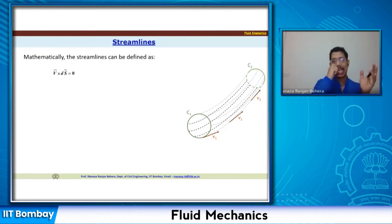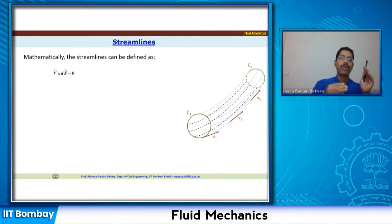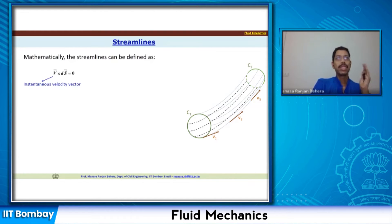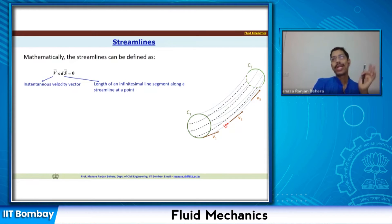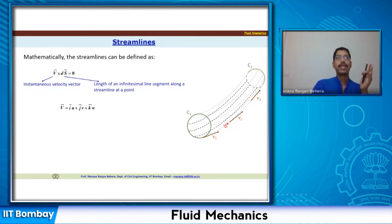Mathematically, we can write V cross ds equals zero, because the velocity normal to the streamline is zero. Here V is the instantaneous velocity vector and ds is the infinitesimal line segment. Taking any small line segment ds with velocity V, the cross product V × ds equals zero.